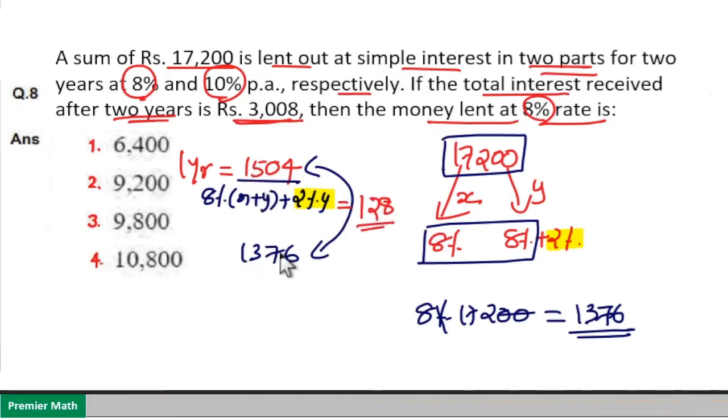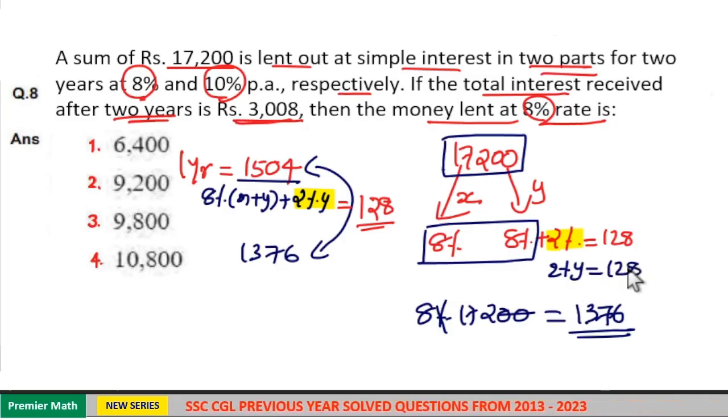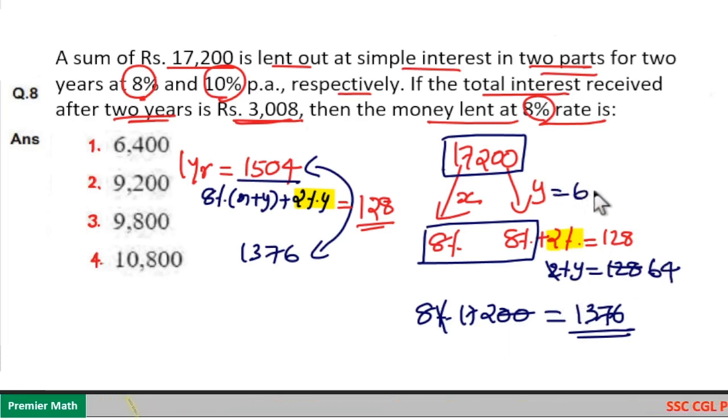So, 2% of Y is equal to 128 means 1% is 64. Then, 100% of Y is equal to Y, which is equal to 6,400.